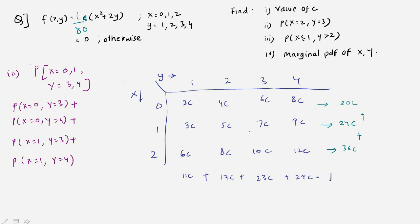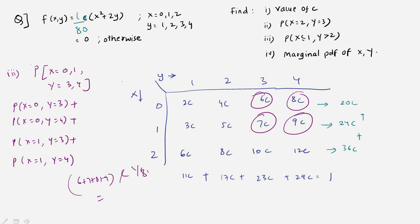Tracing these four terms from the table: x=0,y=3 gives 6c; x=0,y=4 gives 8c; x=1,y=3 gives 7c; x=1,y=4 gives 9c. Adding: (6 + 7 + 8 + 9) × c = 30 × (1/80) = 3/8. Always remember, probability must be less than or equal to 1 — this is a useful tip to verify your answers.